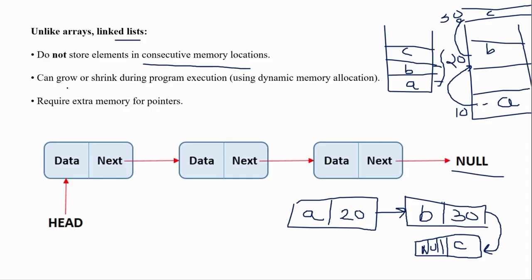A linked list can grow and shrink during program execution using dynamic memory allocation. In the previous video we discussed static and dynamic allocation — a linked list follows dynamic memory allocation, meaning memory is used as needed when the program runs. It requires extra memory for pointers, so you must store both data and the pointer.